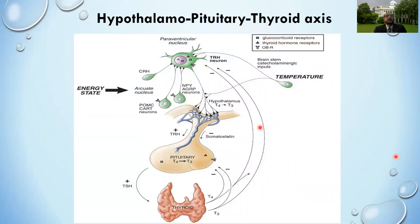Thyroid hormones also cause increased carbohydrate absorption through the gut, formation of LDL receptors, production of calories by stimulating oxygen consumption and increasing metabolic rate. One important mechanism to understand is the negative feedback that regulates synthesis and secretion of thyroid hormones.